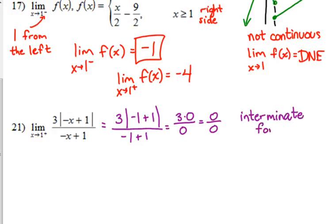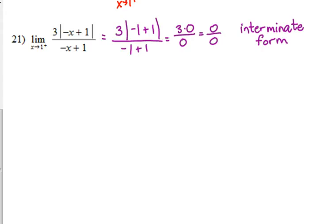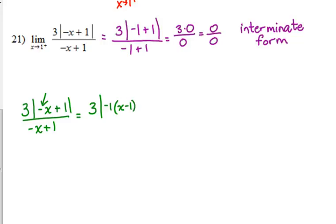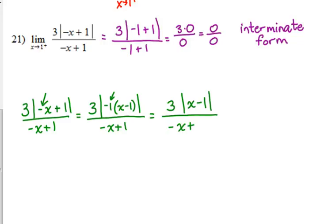0 over 0 is an indeterminate form — the function is not defined there. But we can still figure it out using the fact that we can express this as a piecewise function. When there's a negative in front of the variable, I'm going to start by factoring that out. The absolute value of negative 1 is positive 1, so the first thing we need to do to this expression is factor out that negative.